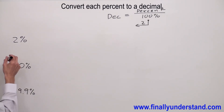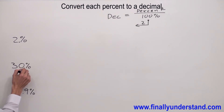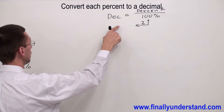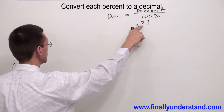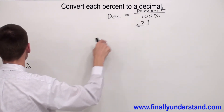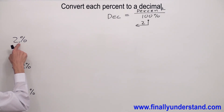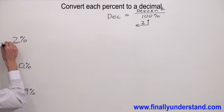Let's take a look at these examples. Anytime you are going to deal with a whole number, first what you're supposed to do is find the decimal point. The decimal point is always at the end of the number and it's invisible, so you have to make it visible. Anytime we want to find the decimal number, we have to divide the percent number by 100% and move the decimal point twice to the left. So if I'm going to divide 2% by 100%, I have to move my decimal point twice to the left.